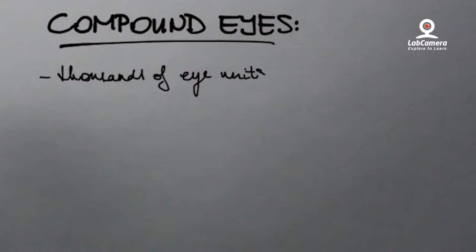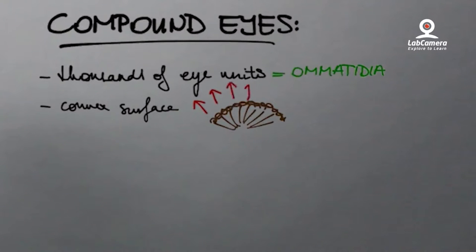Flies have so-called compound eyes, meaning there are several tiny individual eye units. And by several, I mean thousands. More professionally, these eye units are called ommatidia. They are located on a convex surface, thus pointing in slightly different directions.